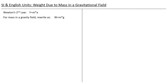Let's begin our study of units by talking about the difference between mass and force, or mass and weight as we sometimes call it. Let's start with SI units and look at Newton's second law: F = ma. If we're talking specifically about the weight of a mass exposed to a gravitational field, we can rewrite this as: weight equals mass times acceleration of gravity.